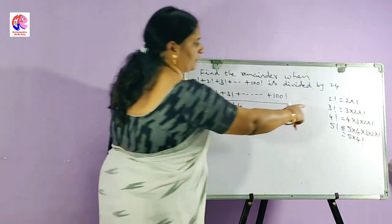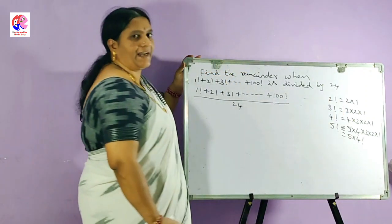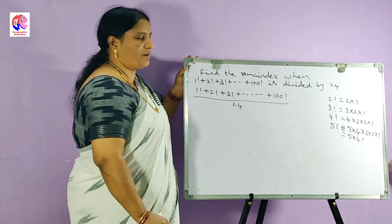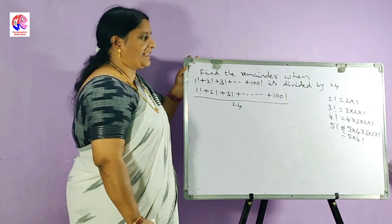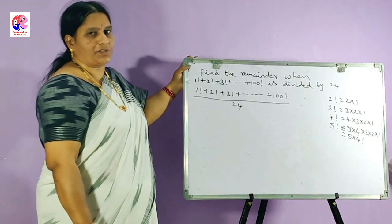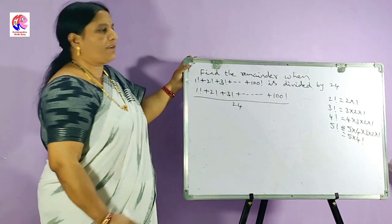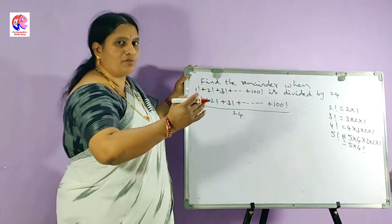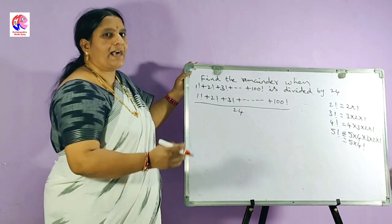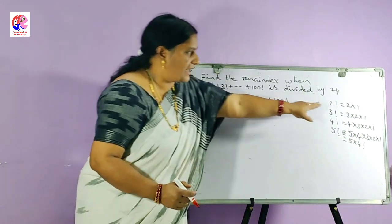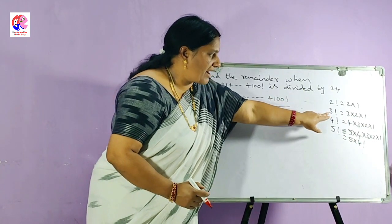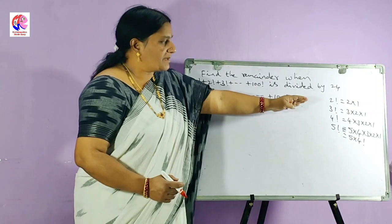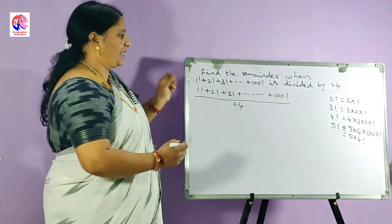Now 2 factorial is equal to 2 into 1, and 3 factorial is 3 into 2 into 1. Whenever we are finding the factorial of a given natural number, we write the natural numbers from the given number down to 1 and multiply them. Similarly for 4 factorial and 5 factorial.